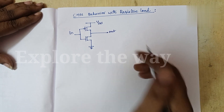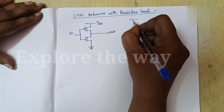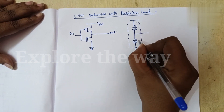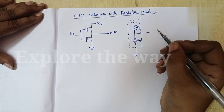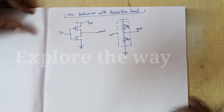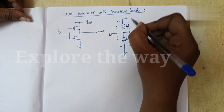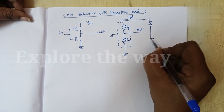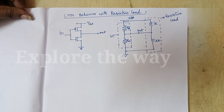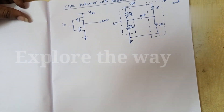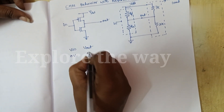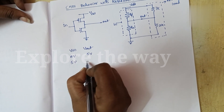This is the CMOS inverter and its equivalent circuit. The resistance offered by the NMOS transistor is Rn and the resistance offered by the PMOS transistor is Rp. Suppose this output is connected to a resistive load. Generally, without any load on the output, the CMOS behavior is: if the input is 0V, output is 5V, and if the input is 5V, output is 0V.